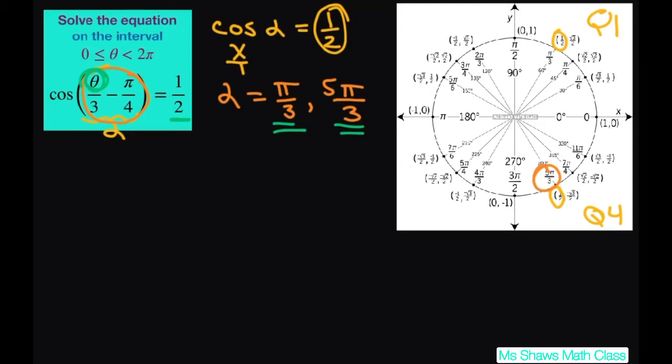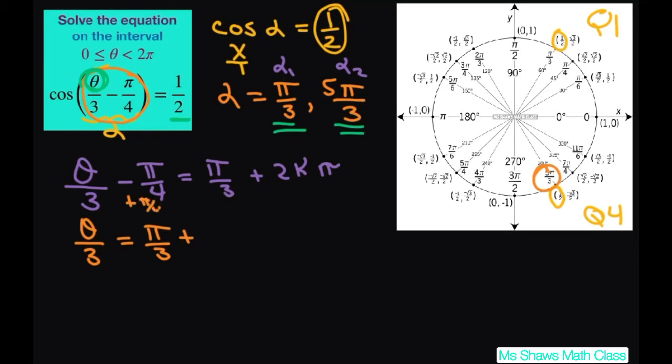So basically let's go ahead and solve and set this to theta divided by 3 minus π divided by 4. I'll call this one alpha 1, alpha 2. So for alpha 1 we get π divided by 3 plus 2kπ. And we'll go ahead and solve for this one. So we have theta divided by 3 equals π divided by 3 plus we're adding π divided by 4 to both sides.